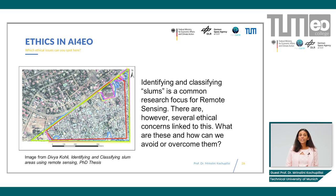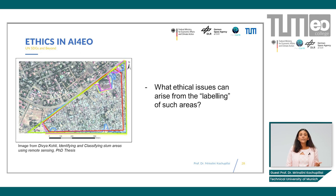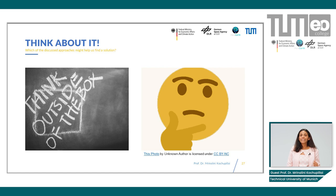This actually is one of the major areas of research using AI for Earth Observation. AI for Earth Observation is being used to identify slums across the globe. Now what might be some of the ethical issues that might arise from labeling or identifying an area as a slum? Take another moment and discuss it if you're sitting with colleagues, or think about it if you're sitting alone.